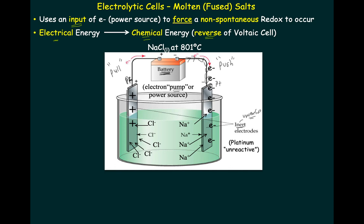We're going to push electrons into this side and pull them back from the other side. Since electrons are moving away, that's going to be the positive side. Electrons are going in — that's going to be the negative side. So sodium ions that are free to move around in here are going to move towards the negative side, and the chloride ions are going to move towards the positive because they're attracted to it.